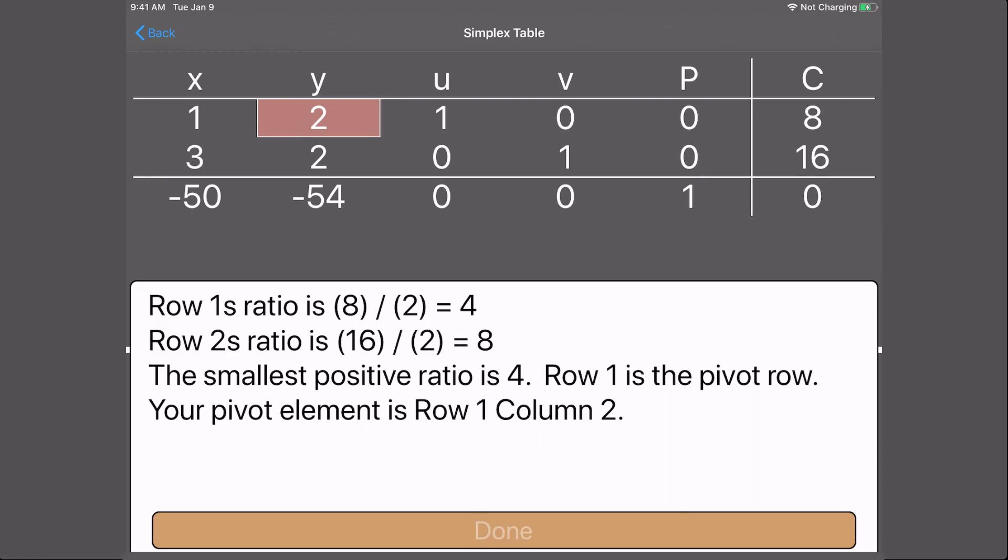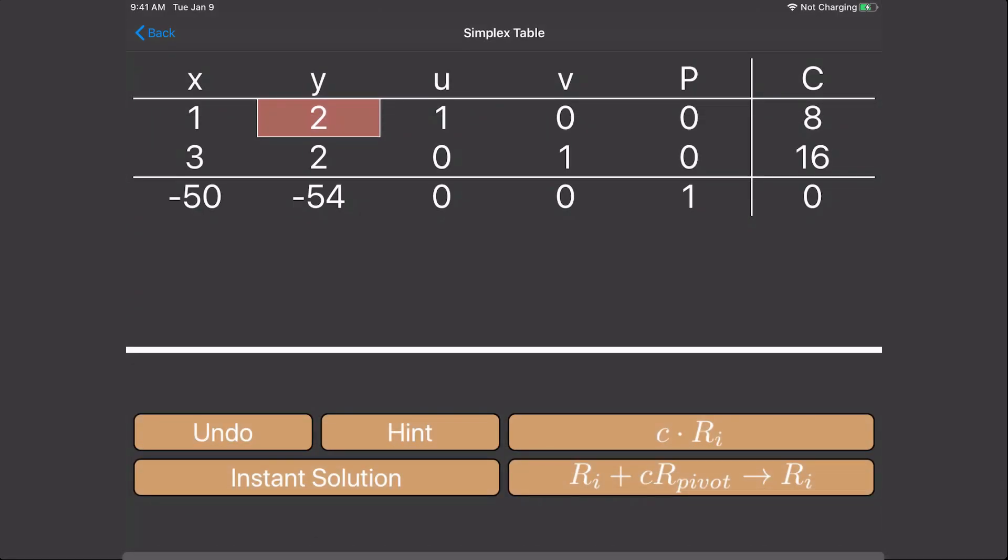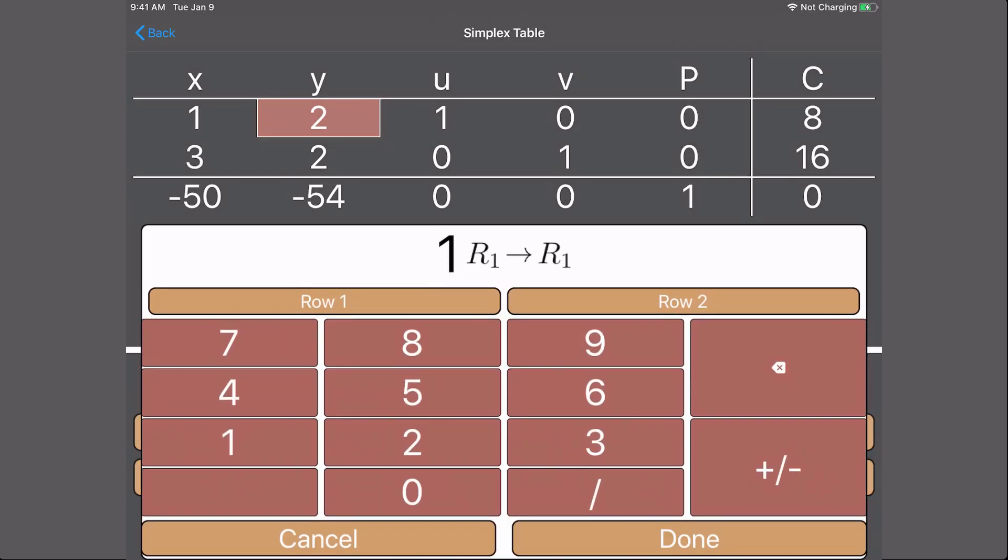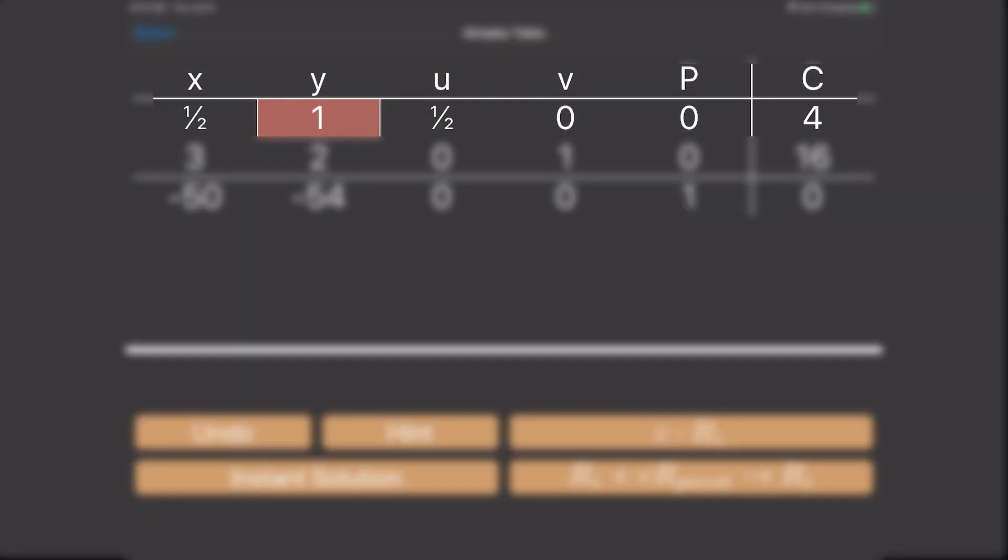Next, we need to scale the row so the pivot element is a 1. We do this by multiplying by the reciprocal of 2. So our row operation is going to be 1 half times row 1. And we store that back into row 1. Make sure you multiply every number in row 1 by 1 half. Our new row is going to be 1 half, 1, 1 half, 0, 0, 4.